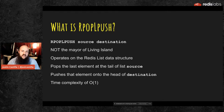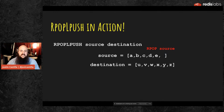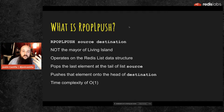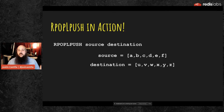RPOPLPUSH essentially does two things in one command. It pops the last element at the tail of the source list, and then pushes that element onto the head of the destination list. That's O(1), so you can't really get better than that. Let's see this in action with an example. RPOPLPUSH with a source and destination — two separate lists. My source list is A, B, C, D, E, F, and my destination list is U, V, W, X, Y, Z.